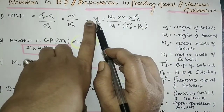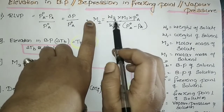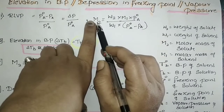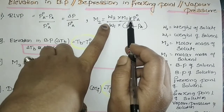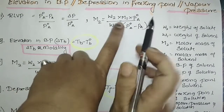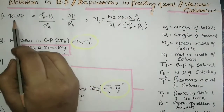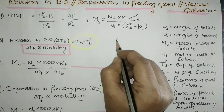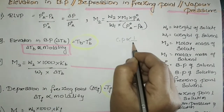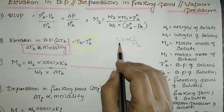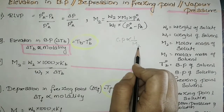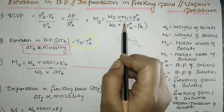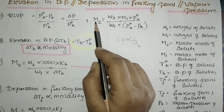M2 means the molar mass of the solute. A question might provide W2, W1, and the pressures, and you have to calculate M2. So remember: M2 is equal to (W2 / W1) × M1 × P0A / (P0A − PA). Now notice the relation here — RLVP is a colligative property, and colligative property is inversely proportional to the molar mass of the solute. More the molar mass, lesser will be the colligative property. So M2 appears in the denominator when the colligative property is in the numerator.